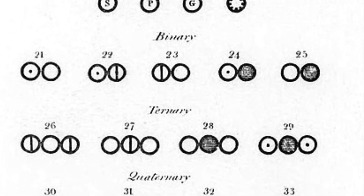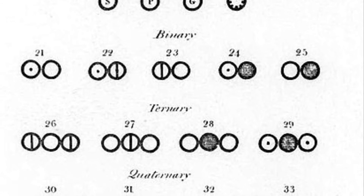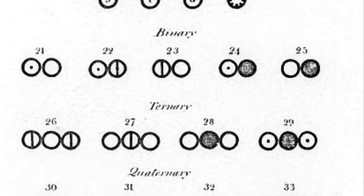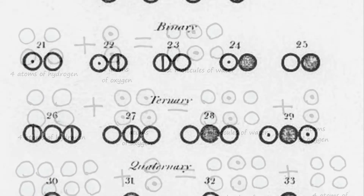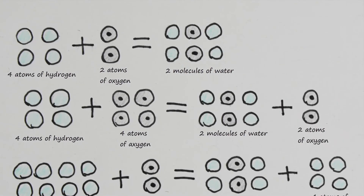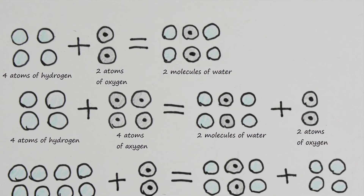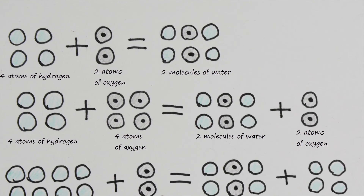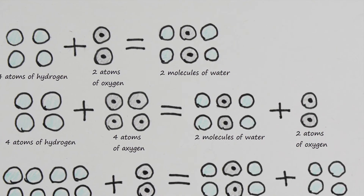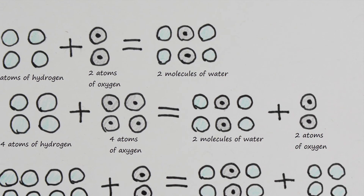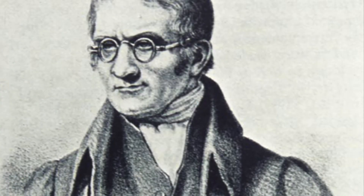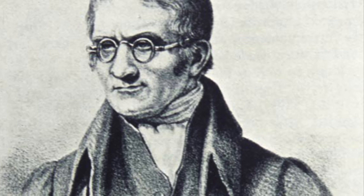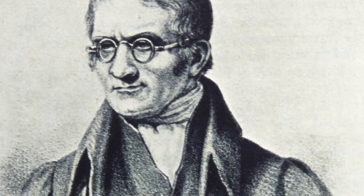He had also touched base upon the weights of a few elements. However, he had not gone deeply on them. He had created simple formulas that would give us the approximate weights of elements. He had passed away on July 27, 1844, at the age of 77.